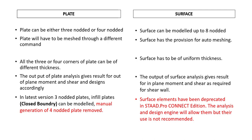Now let's look at plate element versus surface. If you want to model a structure which contains a wall, slab, or panel type component, you have two choices. The first is to model that panel using a collection of individual elements — this is called a finite element mesh, which is an assembly of 2D triangular or quadrilateral elements. The second is to model it as a single physical object called a surface.